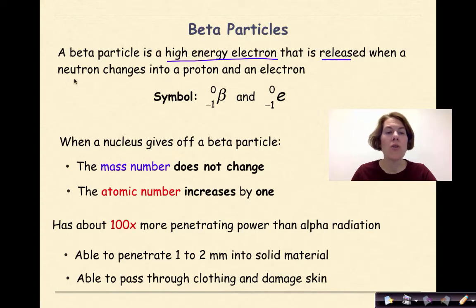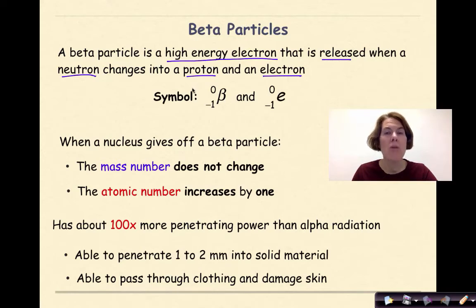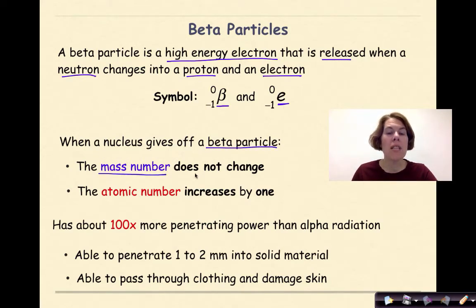A beta particle is a high-energy electron that is released when a neutron changes into a proton and an electron. In the nucleus, some particles have the ability to change — when a beta particle is emitted, a neutron loses an electron, resulting in the formation of a proton. A beta particle can be represented by the beta symbol or as E for electron. When a nucleus gives off a beta particle, the mass number does not change.